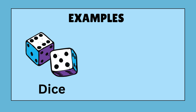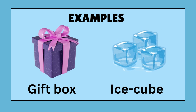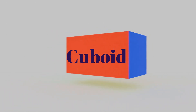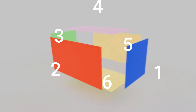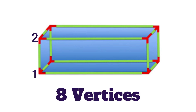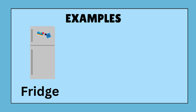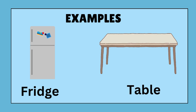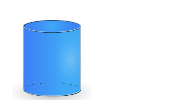Let's have some examples of cube: dice, Rubik's cube, gift box, ice cube. Next one is cuboid. It has similar features with some differences. It has six faces, 12 edges, and eight vertices. Some examples of cuboid are: book, bricks, refrigerator, table, boxes, etc.